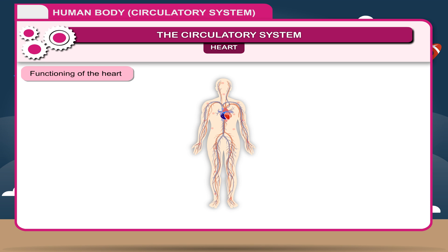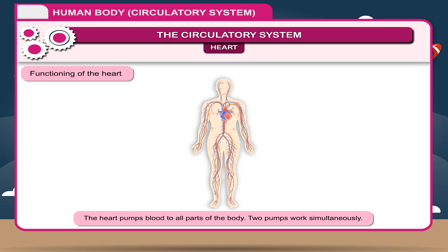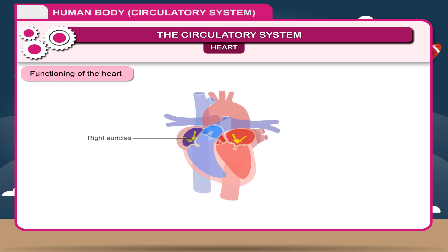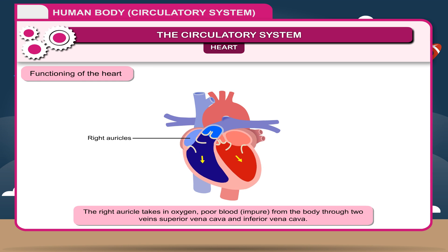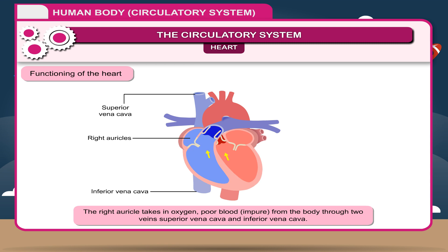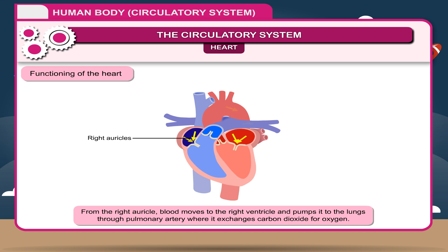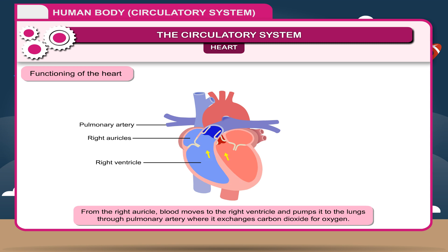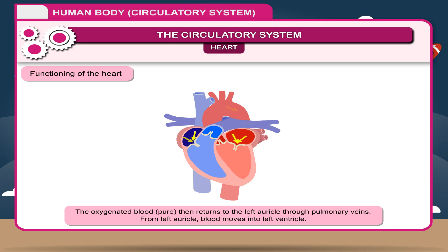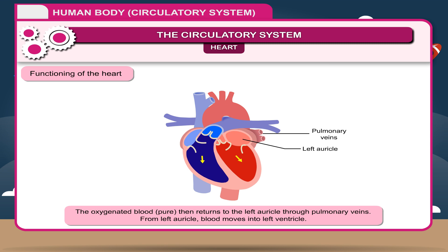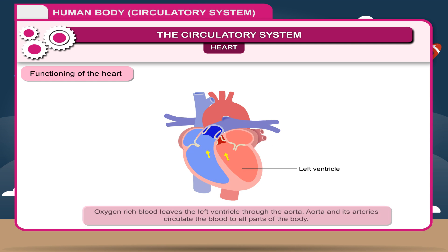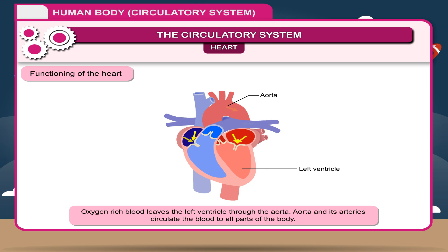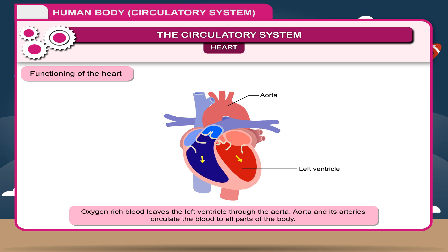Functioning of the heart: The heart pumps blood to all parts of the body, with two pumps working simultaneously. The right auricle takes in oxygen-poor, impure blood from the body through two veins — the superior vena cava and inferior vena cava. From the right auricle, blood moves to the right ventricle and is pumped to the lungs through the pulmonary artery, where it exchanges carbon dioxide for oxygen. The oxygenated blood then returns to the left auricle through pulmonary veins, then moves into the left ventricle. Oxygen-rich blood leaves the left ventricle through the aorta, which circulates blood to all parts of the body.